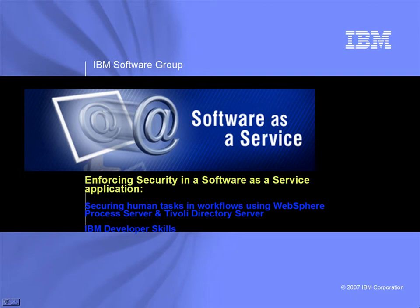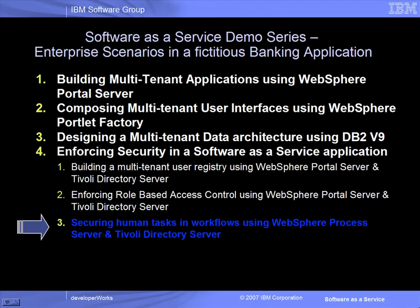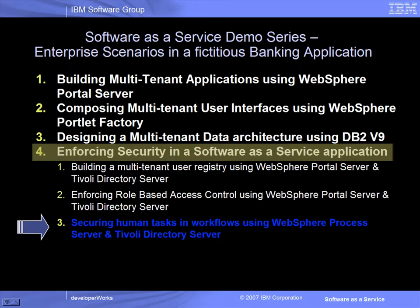Welcome to the IBM Software as a Service Demonstration Series. In this series, we will demonstrate a set of architectural patterns exploiting features in IBM middleware to build Software as a Service solutions. The Software as a Service Demo Series includes seven demonstrations based on a fictitious banking application. Each demonstration shows a scenario in the banking application which addresses some technical challenges relevant for building a Software as a Service solution. This demo is part of the scenario describing how to enforce security in a Software as a Service application.